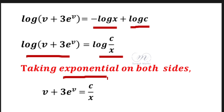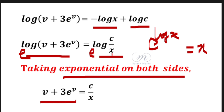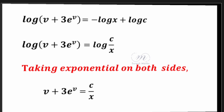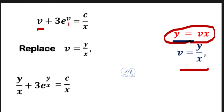Taking the exponential on both sides, and using e^(log x) equals x, the log cancels. The result becomes v plus 3e^v equals c/x. Now back-substituting v equals y/x, so e^v becomes e^(y/x) and v becomes y/x.